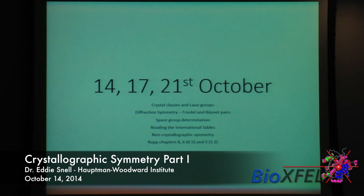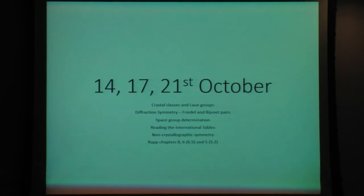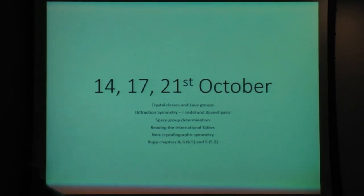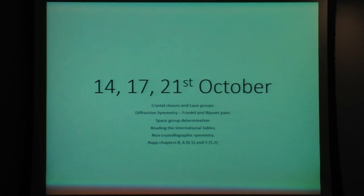What I'm talking about is Crystal Classes and Rao Groups, Fractional Symmetry and 5-order-bit furs, and Space Group Determination. We're reading the international tables, and that's kind of a legacy thing because most of the software now has got very good at telling you what you've got. We will do some exercises on the international tables. Do you know what the international tables are, first of all?